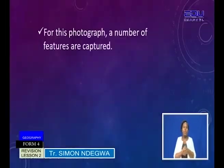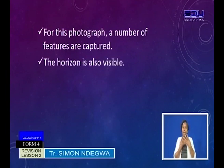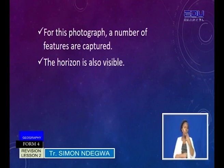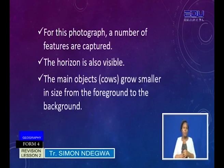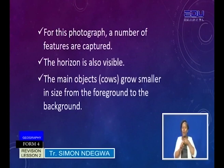For this photograph, we are seeing a number of features are captured. Number one, the horizon is visible — you can see the horizon from the front part of the photograph. Another point: the main objects, which are the cows on the photograph, grow smaller in size from the foreground to the background. So they become smaller and smaller as you move away from the camera. That is another very important item you need to observe on a photograph.